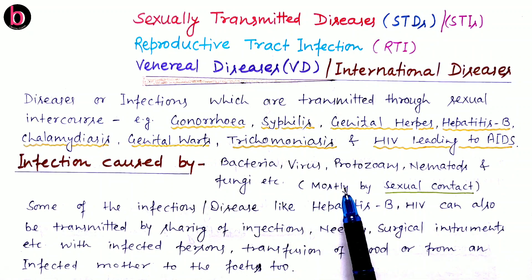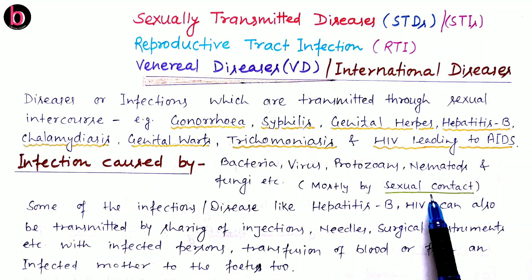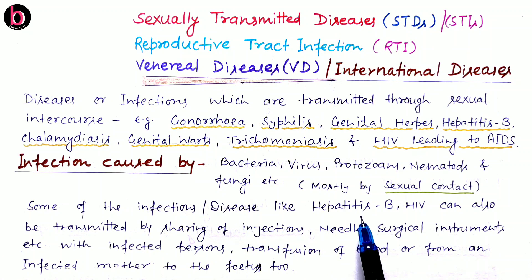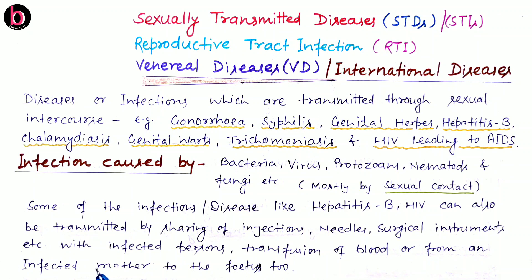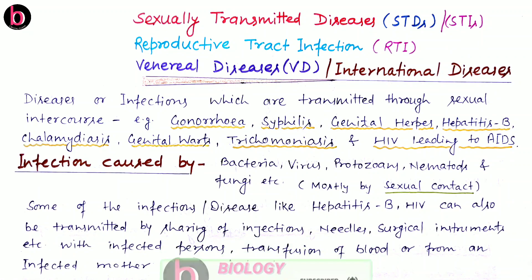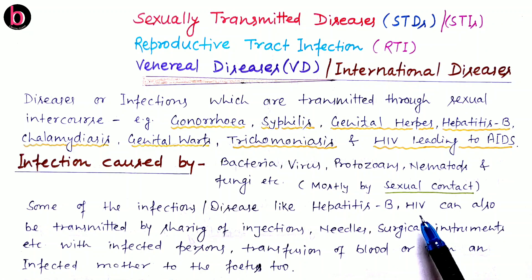Mostly STDs are Sexually Transmitted Diseases, transferred when an individual comes into sexual contact. However, there are also a few which are non-sexually transmitted. Infections like Hepatitis B and HIV can also be transmitted by sharing of injections, needles, or surgical instruments with an infected person. Transfusion of blood, or transmission from an infected mother to the fetus, may also spread these infections. Some infections like herpes and syphilis may also increase the risk of HIV infection.